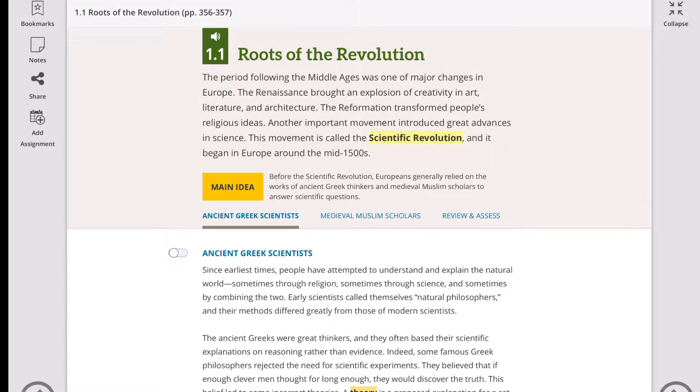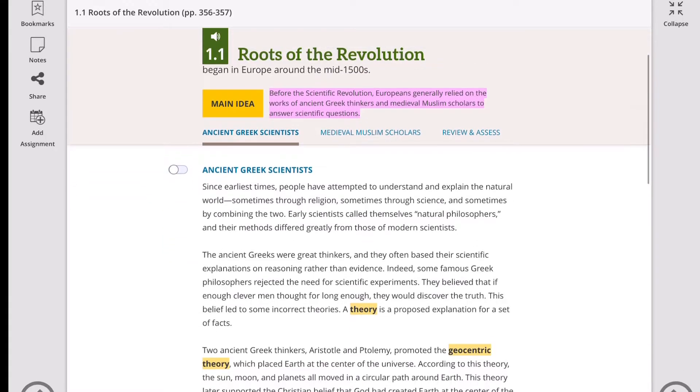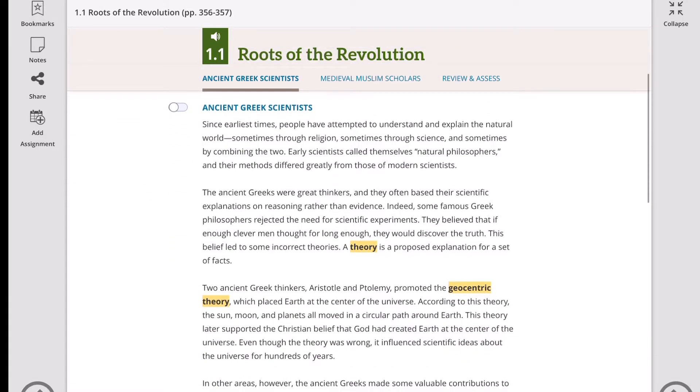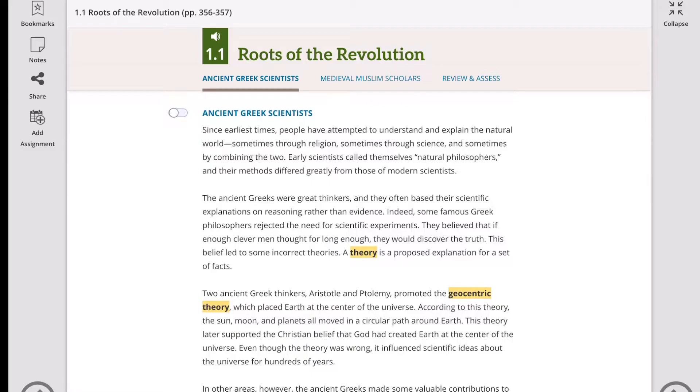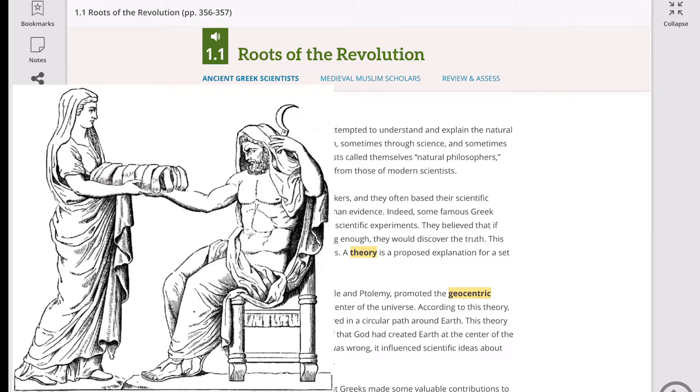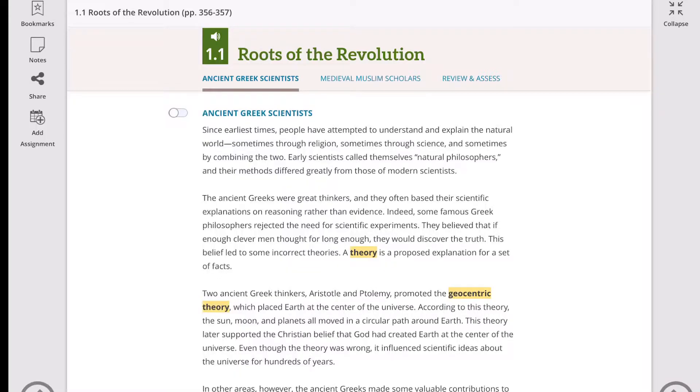So the main idea of this lesson is that before the Scientific Revolution, Europeans generally relied on the works of Greek thinkers and medieval Muslim scholars to answer scientific questions. Early scientists called themselves natural philosophers, and their methods differed greatly from those of modern scientists who use observation and technology that relies on empirical or systematic ways of gathering evidence.